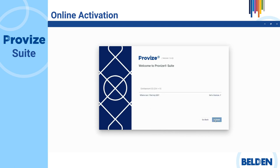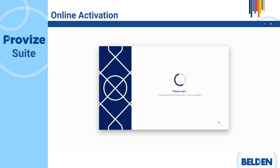Then, enter your Entitlement ID number and complete the activation by clicking on the Activate button. Wait until the next dialog confirms that the activation was successful.